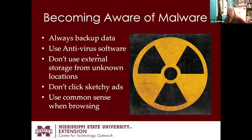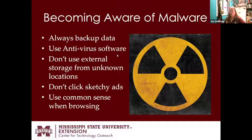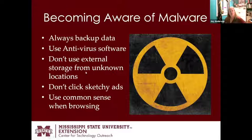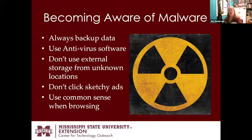Other ways to protect your computer include using antivirus software. A lot of computers come with antivirus already loaded, but you need to make sure something is activated. If you don't like what's on the computer, you need to learn how to turn it off so you can install something else. Don't use external storage from unknown locations — that's often how viruses get transferred. Make sure any jump drives you use come from people you trust who also keep their computer clean.